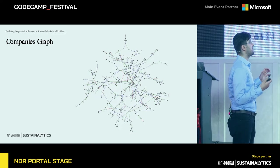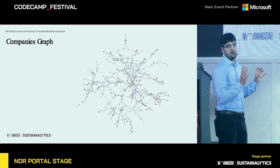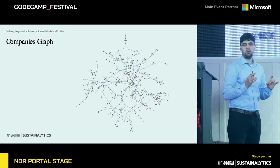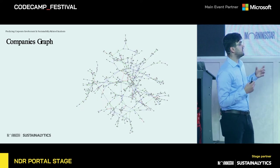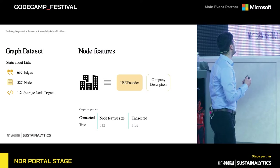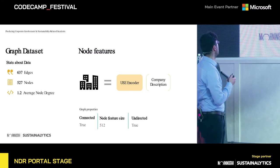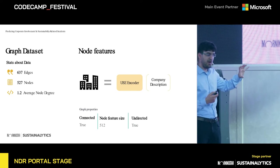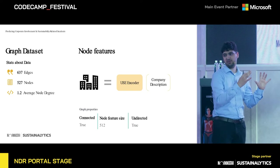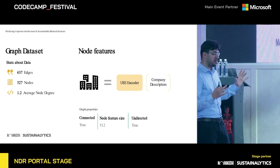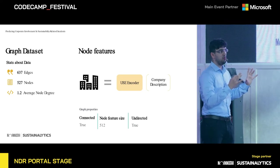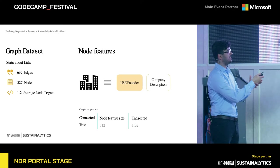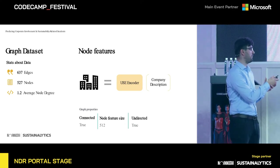Two companies are involved in an incident if the nodes that represent them have an edge between them. We will use graph neural network link prediction to predict future edges in the graph, such that these future edges will represent future incidents. Our dataset consists of 637 edges, 527 nodes, and an average node degree of 1.2. Because each node is represented by a company, and we have a text description for each company, we use the universal sentence encoder to embed that text description into a fixed-sized word embedding. Our final dataset is a connected graph with undirected edges and node feature size of 512.